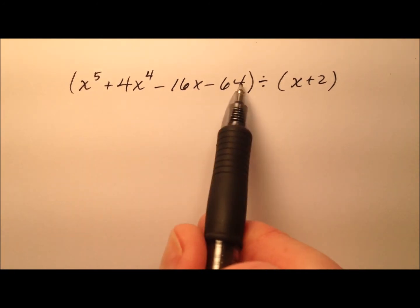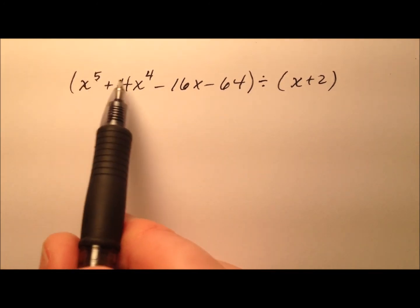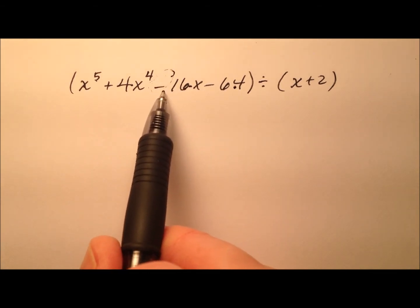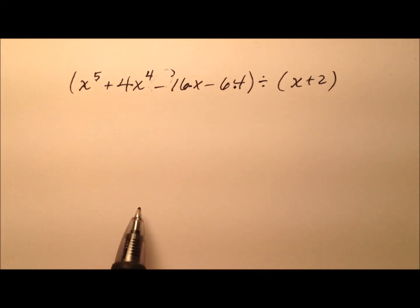This is a quintic polynomial, degree five, but we only have four terms. It looks like we're missing the terms of degree three and degree two, so we don't have our cubic or quadratic terms.